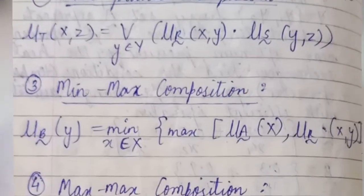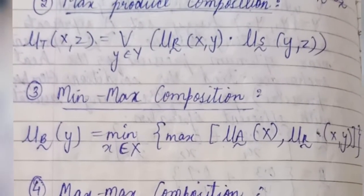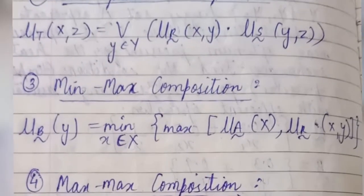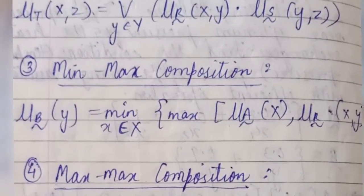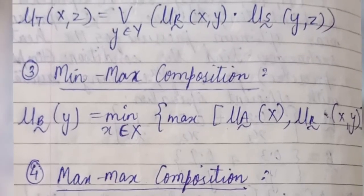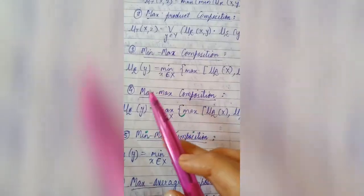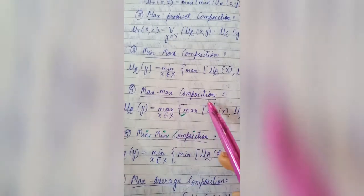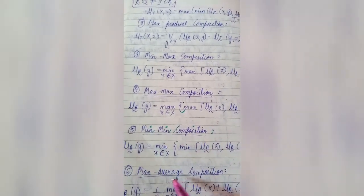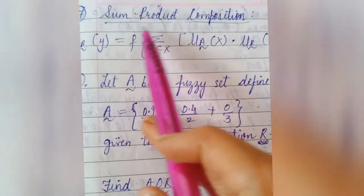There are five more composition operations in fuzzy systems. The two common ones we have learned are: first, max-min composition, and second, max-product composition. The third is min-max composition, the fourth is max-max composition, the fifth is min-mean composition, the sixth is max-average composition, and the seventh is sum-product composition.